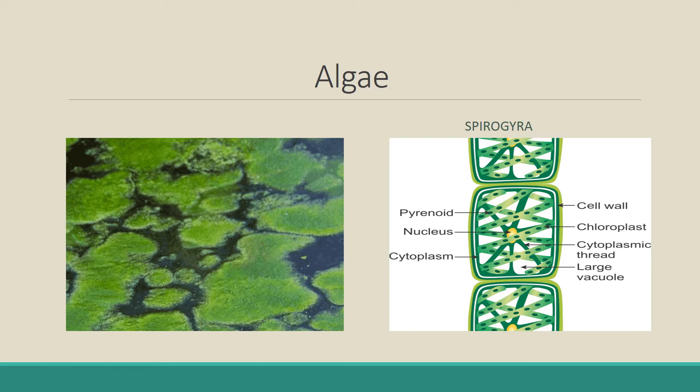Next is algae. Alga is the singular word and algae is the plural. These are either unicellular or multicellular organisms. A unicellular example is Chlamydomonas, and a multicellular example is Spirogyra. Algae are green in color and belong to the plant group. They have the chlorophyll pigment, and because of that all algae are autotrophic in nature.